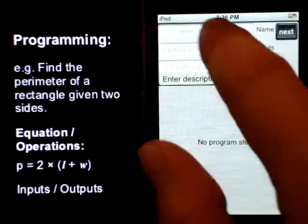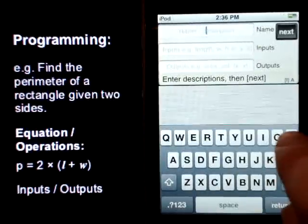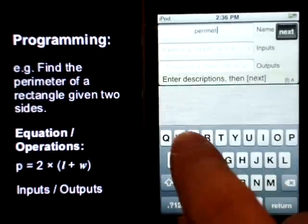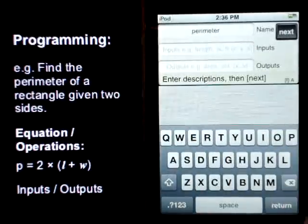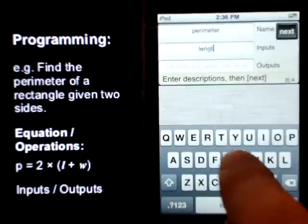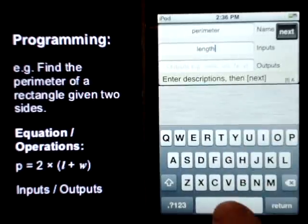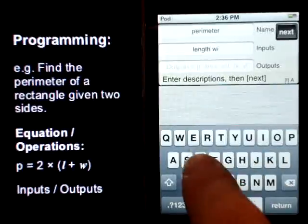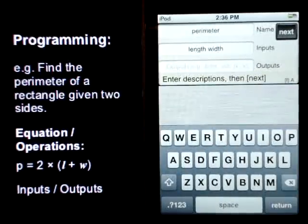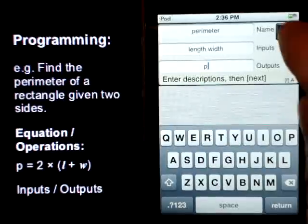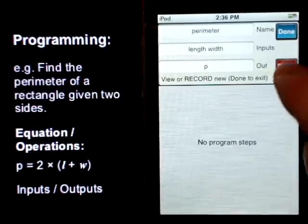Alright, so we'll start with our description and it's perimeter. Our inputs are length and width. And our output is just our perimeter, so we'll call that P. Now we're ready to program.